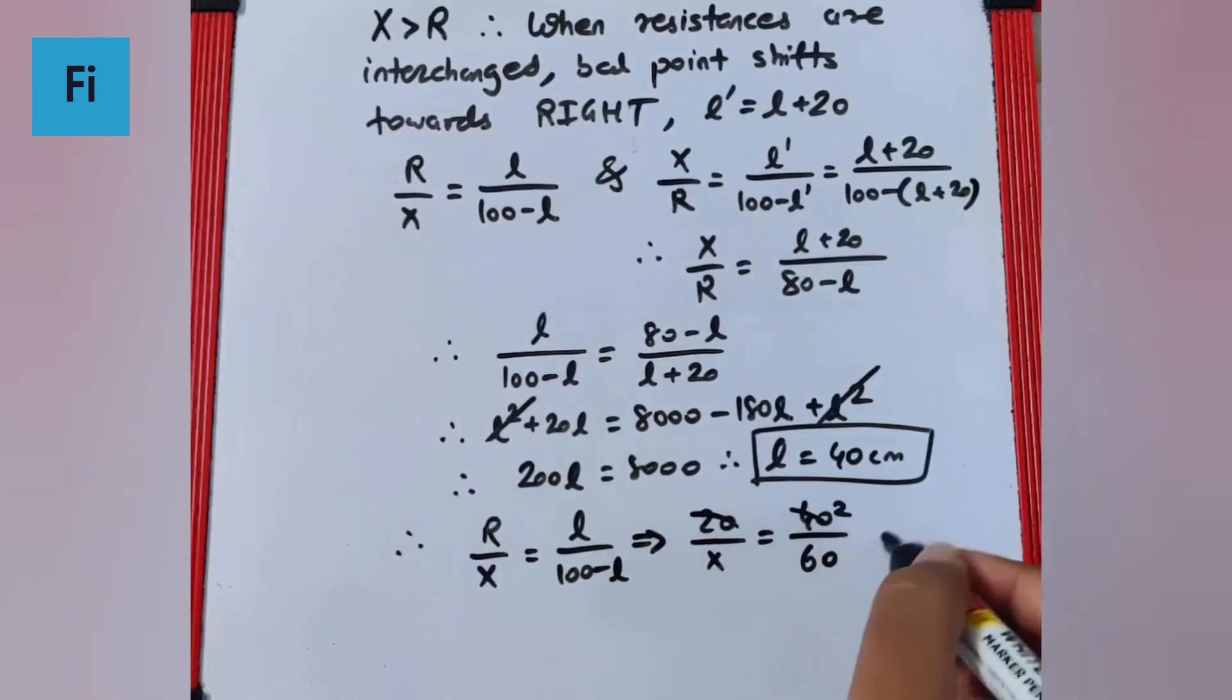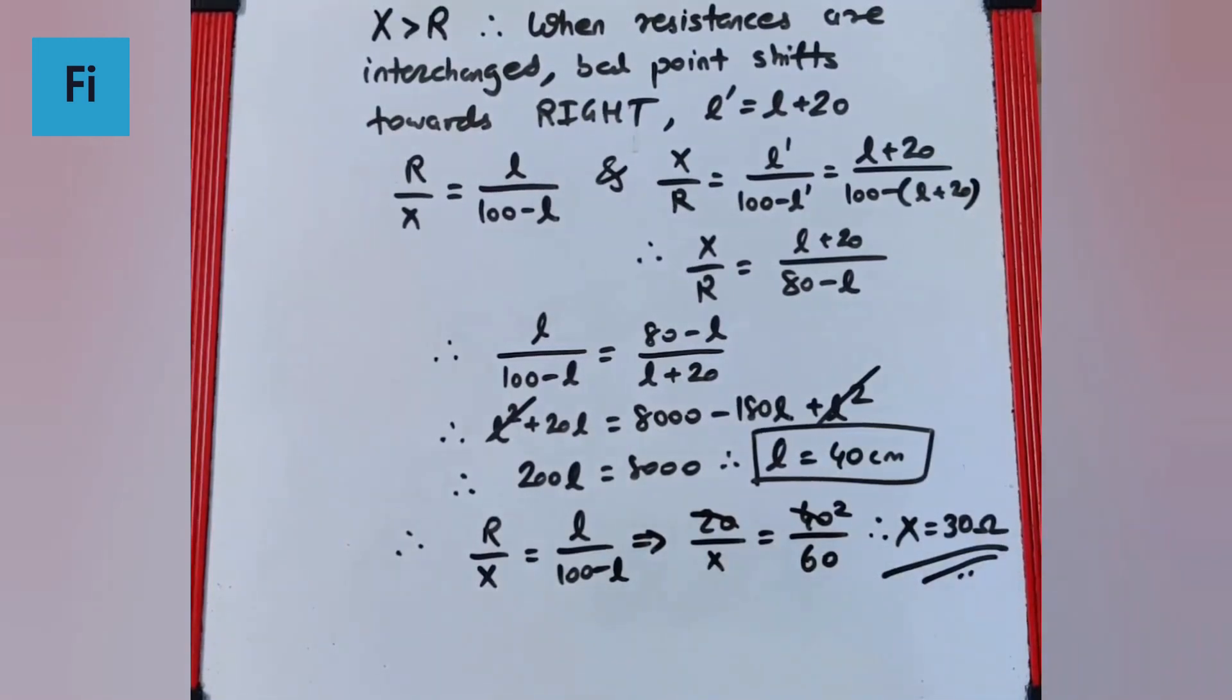So simplifying, X will be 30 ohm, and this will be our final answer.